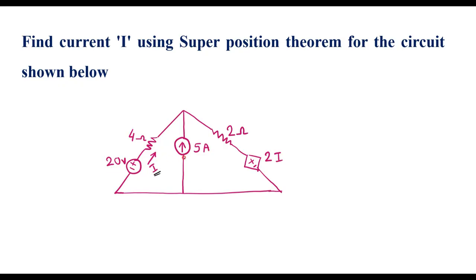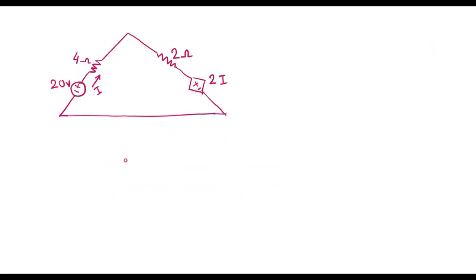In that case, the 5 amp source will be open circuited. Let me draw the circuit considering the 20 volt source alone. This is the circuit considering the 20 volt source alone, where the 5 amp current source is open circuited. Here, let me assume current I1 is flowing when we consider the 20 volt source alone.